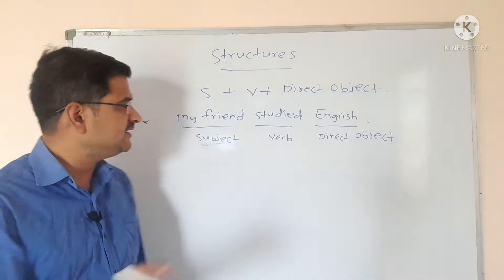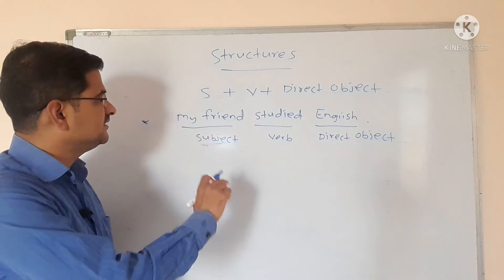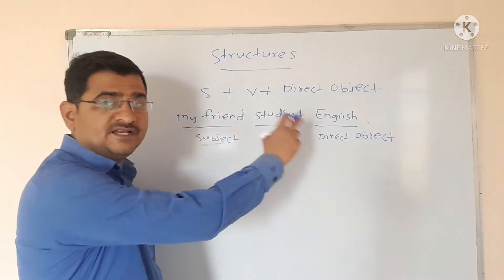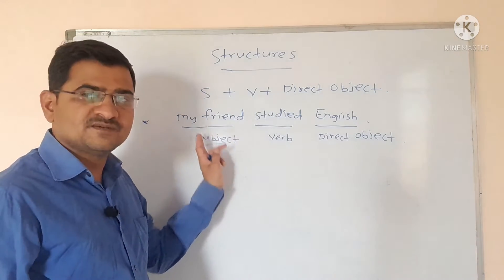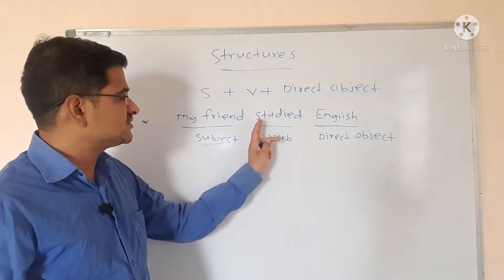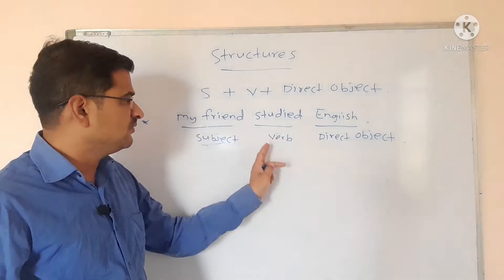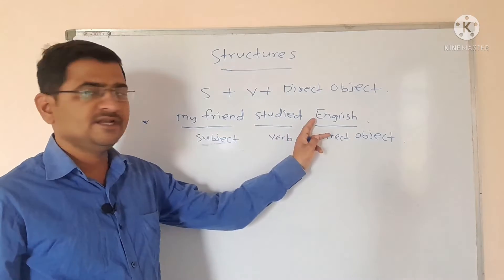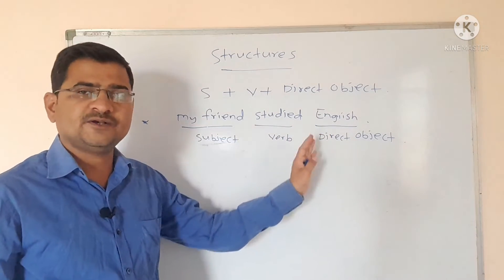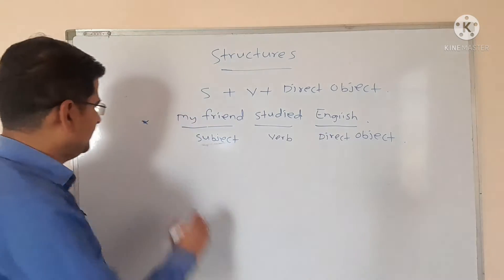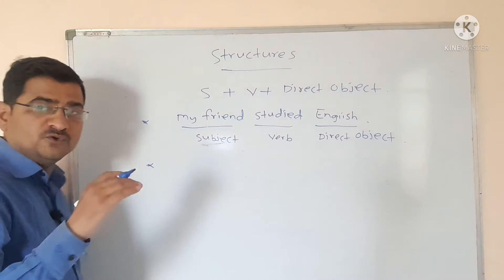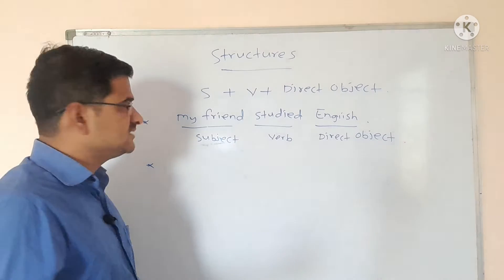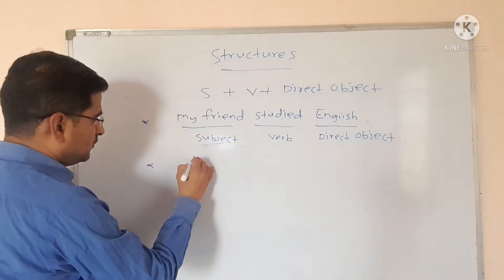What did my friend study? The answer is English. Therefore, 'my friend' is the subject, 'studied' is the verb, and 'English' is the direct object. Look at the board — we will study a few more examples of this structure.